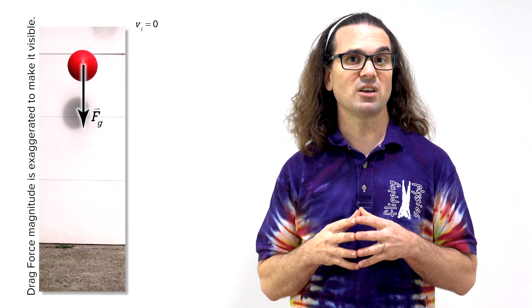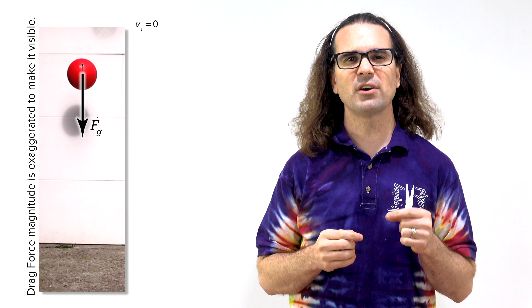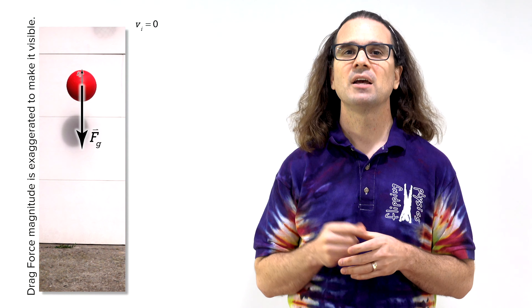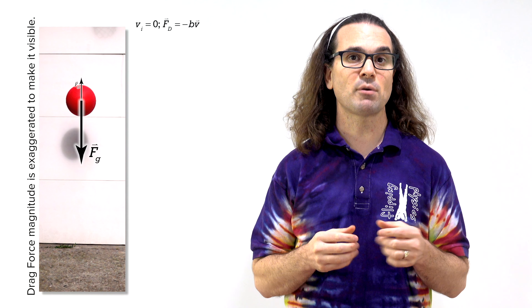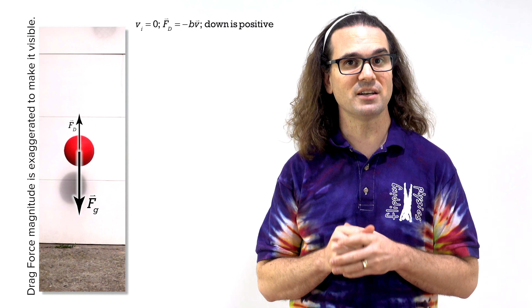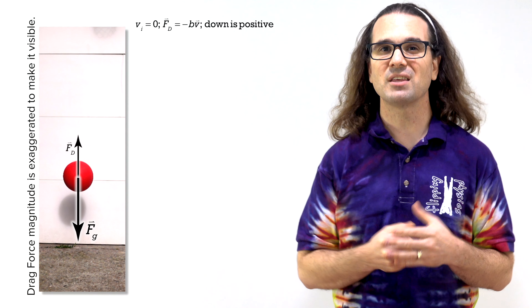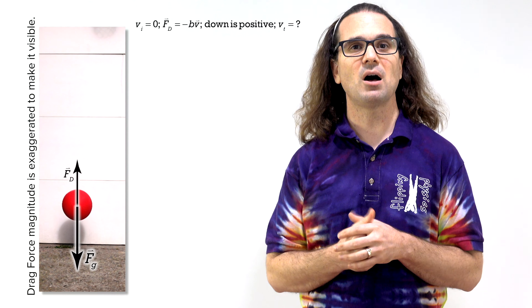Let's use the drag force equation which has the drag force literally proportional to velocity. Drag force equals the negative of the proportionality constant times velocity. Defining down as positive, Bobby, please determine the terminal velocity of the dodge ball.